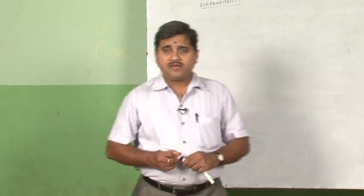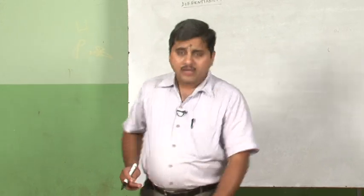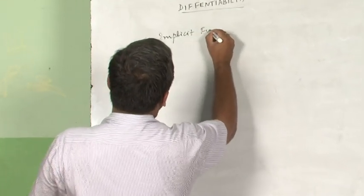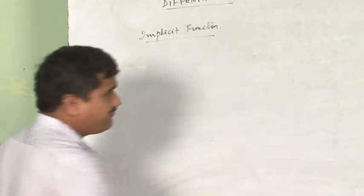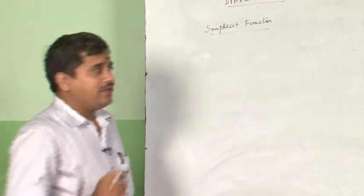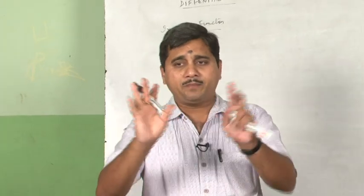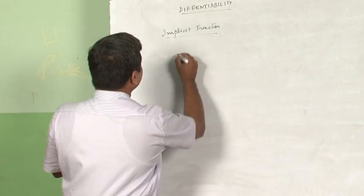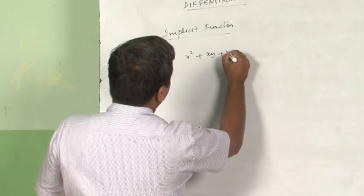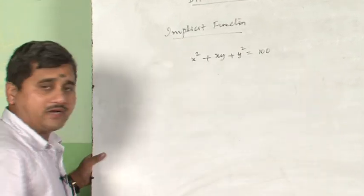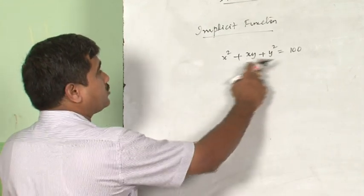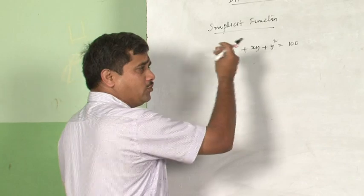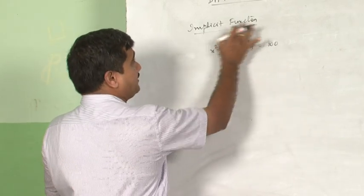We have completed differentiation of composite functions. Now we move to the next topic: implicit functions. An implicit function, in simple terms, is a function in which x and y cannot be separated by any means. For example, take x² + xy + y² = 100. Try any method — factorization or anything — you will not be able to separate x and y. That is why it is called an implicit function.